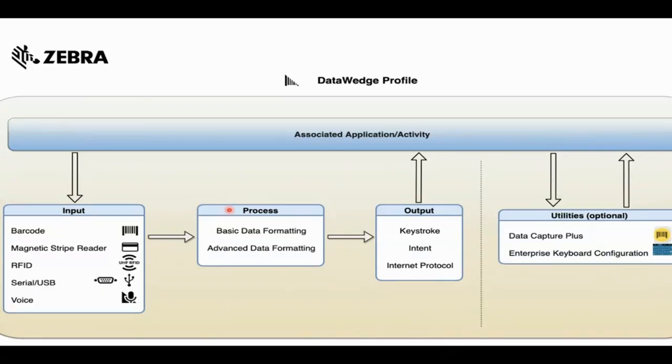Then there is the process plugin. This specifies how the acquired data should be formatted or manipulated based on simple rules defined from basic data formatting or complex rules defined from advanced data formatting. These rules can include adding a prefix, appending an enter key, or checking if the first four digits match the company ID, and if a match is found, modify the data before sending it out.